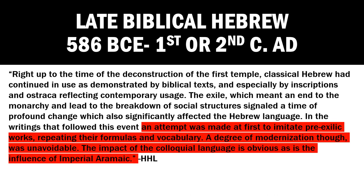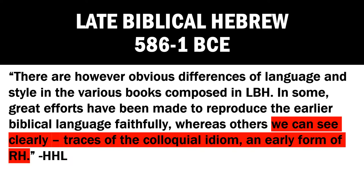Right up to the time of the destruction of the First Temple, Classical Hebrew had continued in use as demonstrated by Biblical texts and especially by inscriptions on ostraca reflecting contemporary usage. The exile, which meant an end to the monarchy and the breakdown of social structures, signaled a time of profound change that significantly affected the Hebrew language. In the writings that followed, there was an attempt to imitate pre-exilic works, repeating their formulas and vocabulary, though a degree of modernization was unavoidable. The impact of the colloquial language and the influence of Imperial Aramaic is obvious, though there are differences in language and style across the various books composed in LBH.